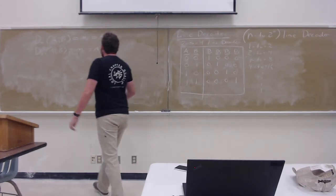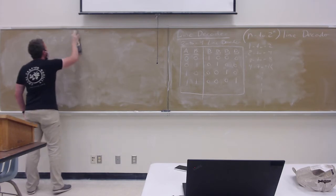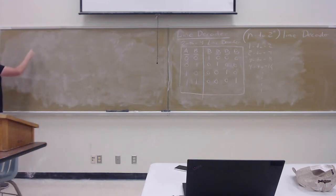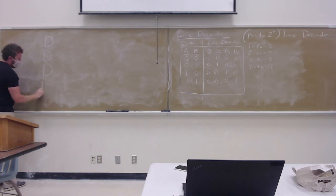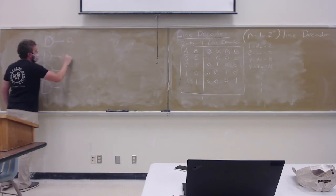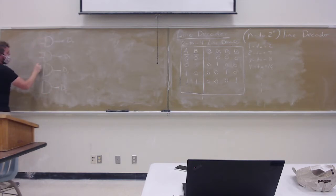Alright, so how do we build it? There's a couple of different ways. We'll focus on the easiest way. That is simply to just have an AND gate for every output. The 2 to 4 decoder is just four AND gates all by themselves. So that's D0, D1, D2, D3. A prime B prime, A prime B, A B prime, A and B.